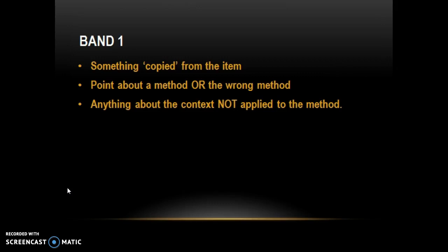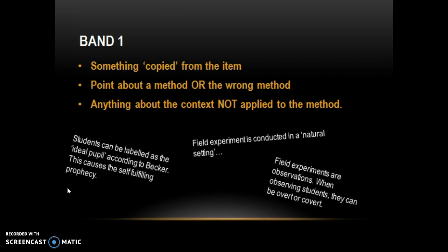Band 1 is just something copied from the item. It could be a point about a method, the wrong method, or anything about the context which is not applied to the method. For example: 'A field experiment is conducted in a natural setting' — where the natural setting part was in the item — with no elaboration. Or 'Field experiments are observations; when observing students they can be overt or covert' — that has drifted to a different method. Or something about the context with no link to the method, such as 'Students can be labelled as the ideal pupil according to Becker, causing self-fulfilling prophecy, streaming, subcultures' — no application, method only.